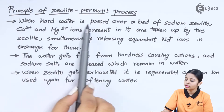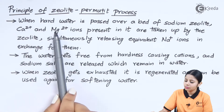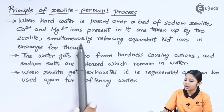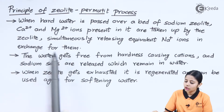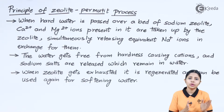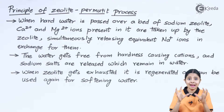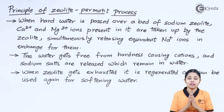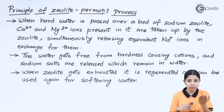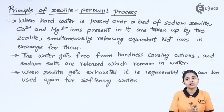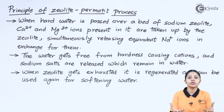The principle of the zeolite permutite process: when hard water is passed over a bed of sodium zeolite, Ca2+ and Mg2+ ions present in the water are taken up by the zeolite, which simultaneously releases equivalent Na+ ions in exchange. Hardness of water is due to carbonates or bicarbonates of calcium and magnesium — so the zeolite gives away its sodium ions and in exchange takes the calcium and magnesium ions. This give-and-take exchange is exactly why it is called an exchange process.